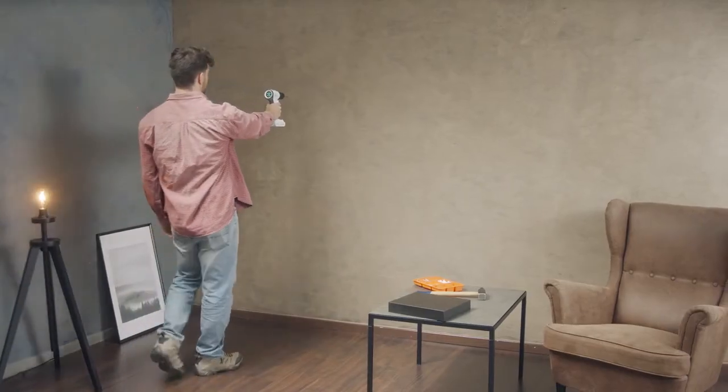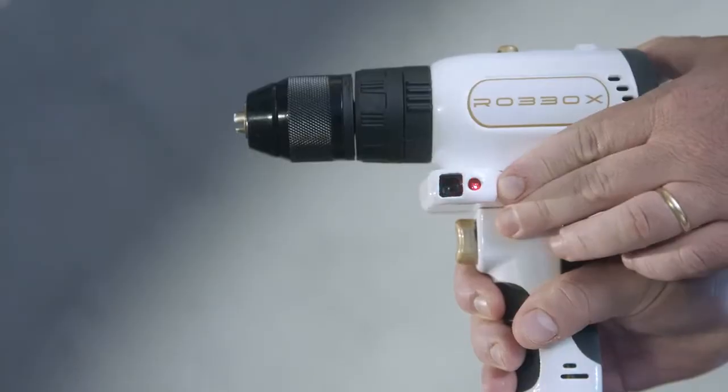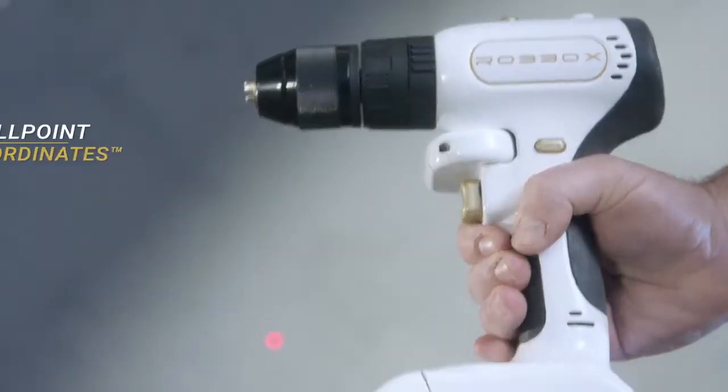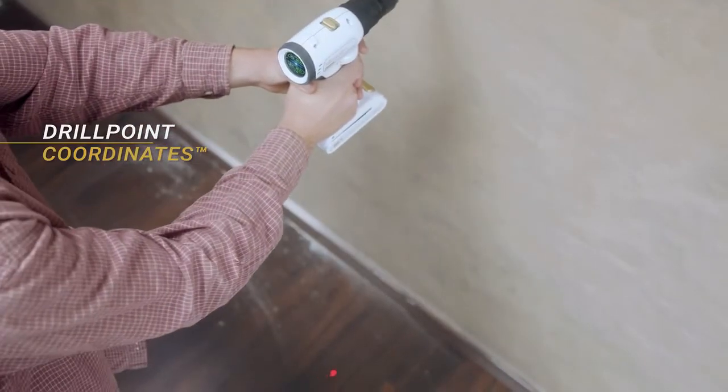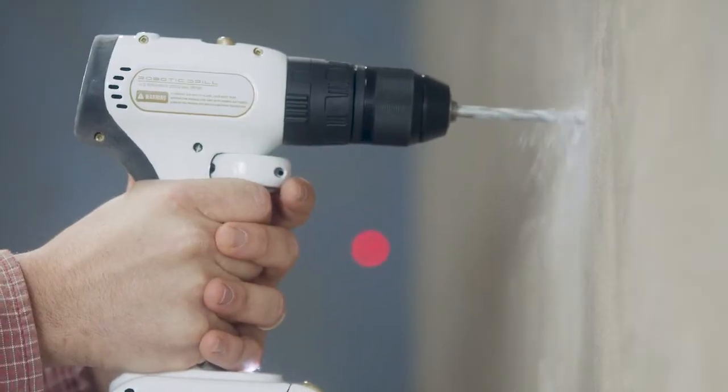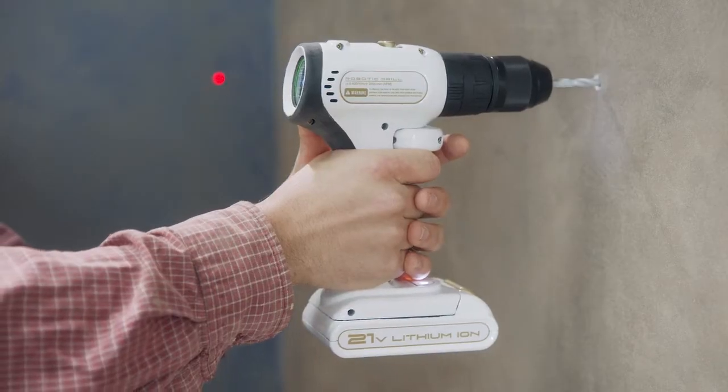Just hold the drill where you want to drill. The lasers measure the distance from the floor and the side wall. We call that drill point coordinates. That is oh so much time-saving for the advanced drillers and will allow beginners not to be left with a wall with more holes than the plot of a soap opera.